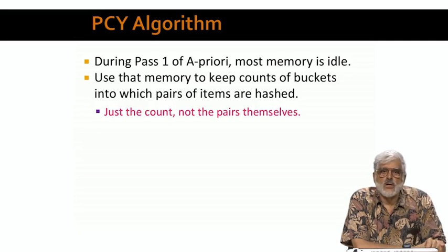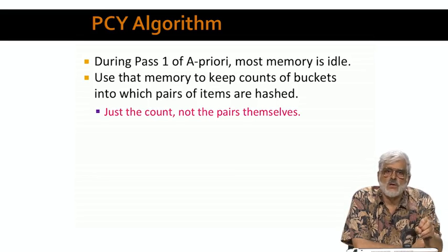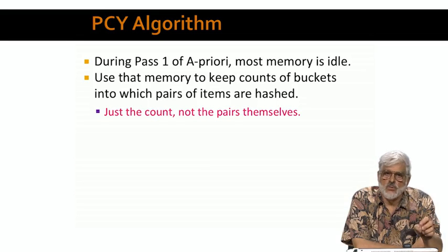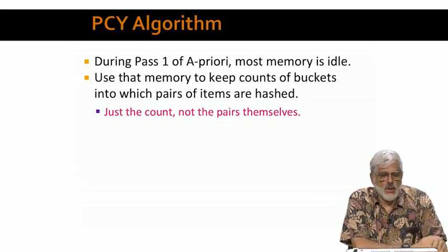What Park, Chen, and Yu suggested was that we could hash all pairs into a large number of buckets. However, these buckets do not hold the pairs themselves — just the count of how many baskets contain pairs that hash to that bucket. Thus, the space needed for a bucket is small. Four bytes is surely sufficient, and we might get away with two bytes if the support threshold is less than 2 to the 16th. It is not possible to store in main memory all the pairs themselves; we're trying to avoid having to use space for every possible pair.